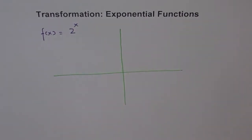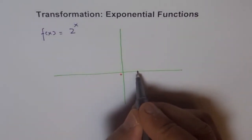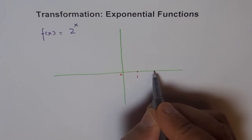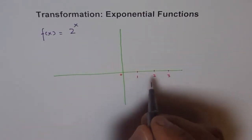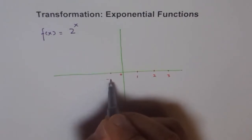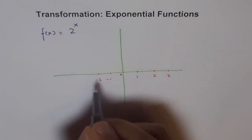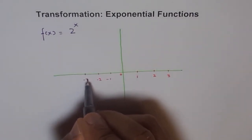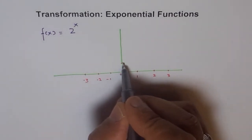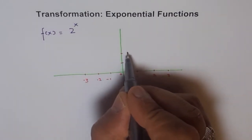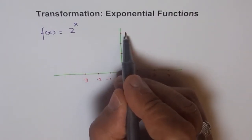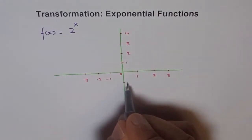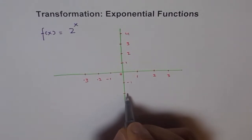Here we have 0, and the positive values 1, 2, 3, 4, and the negative values minus 1, minus 2, minus 3. On the y-axis we have 1, 2, 3, 4, and minus 1, minus 2.